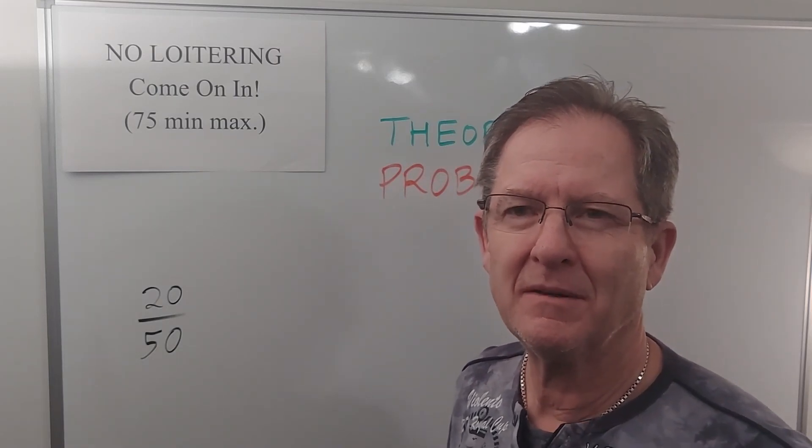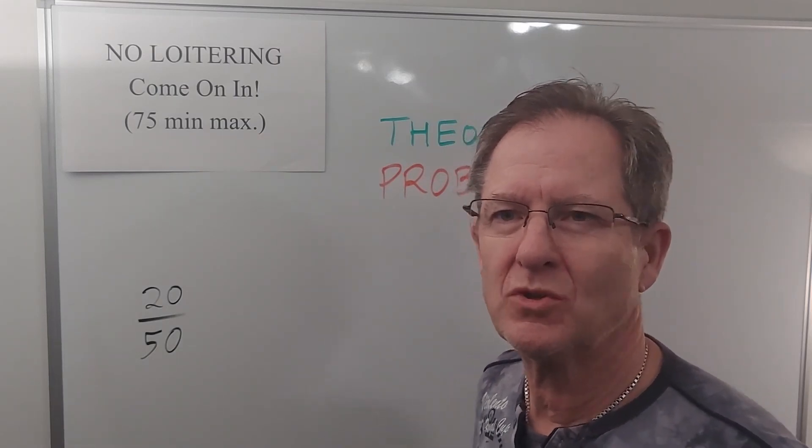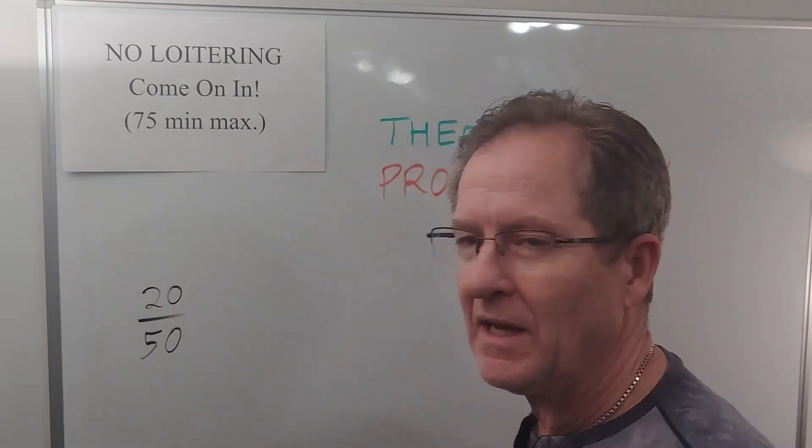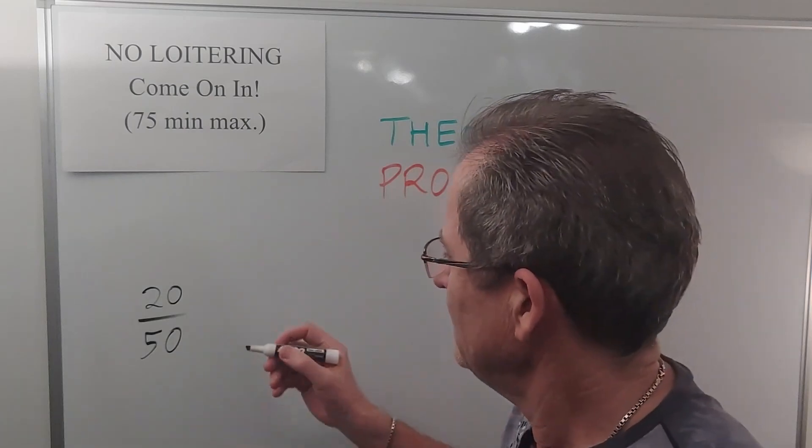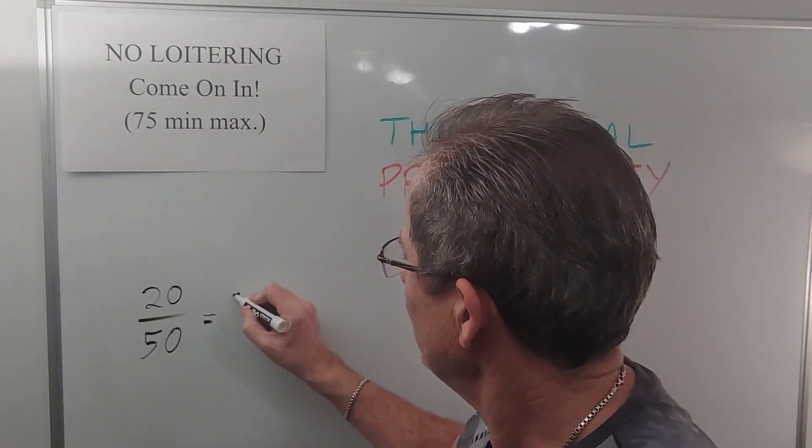...talked about experimental probability: 20 heads out of 50 coin flips. That can be written as 2 over 5 if we reduce the fraction.